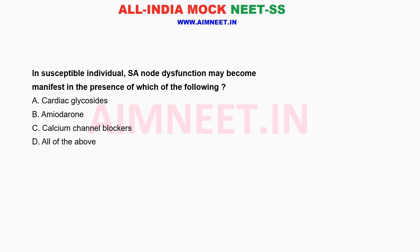In a susceptible individual, SA node dysfunction may become manifest in the presence of which of the following? A. Cardiac glycosides. B. Amiodarone. C. Calcium channel blocker. D. All of the above.